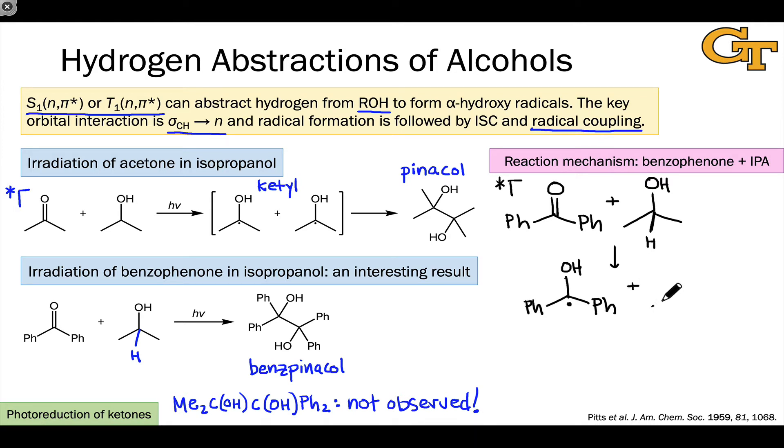We also obtain a ketyl radical derived from isopropyl alcohol, and this ground state radical can transfer a hydrogen to a ground state molecule of benzophenone to generate another benzophenone ketyl radical. When these combine in a hydrogen transfer process, we can end up with another molecule of benzophenone ketyl radical as well as acetone. Now we can see that the combination of these two benzophenone ketyl radicals is going to give rise to the product through radical-radical coupling.